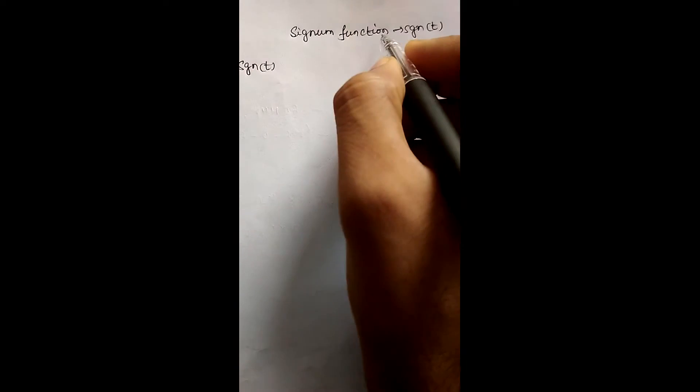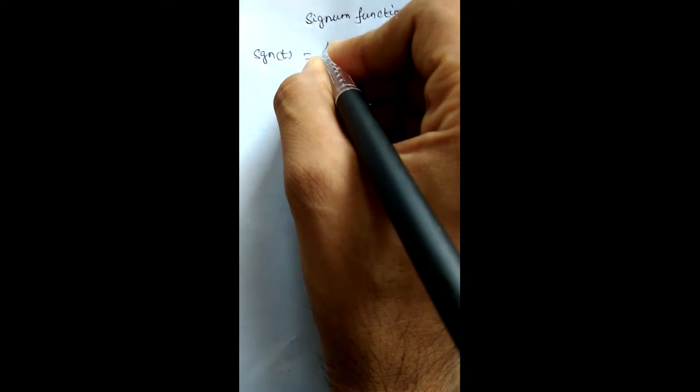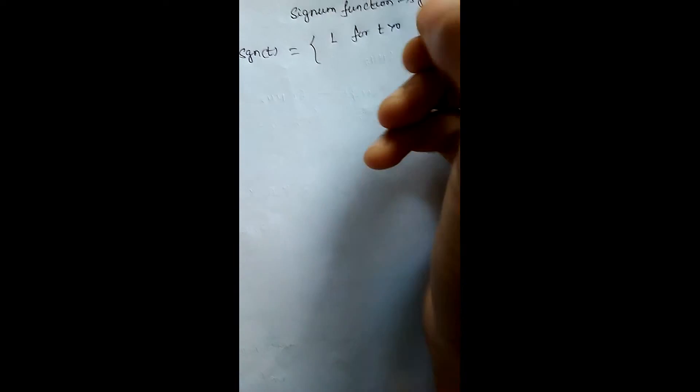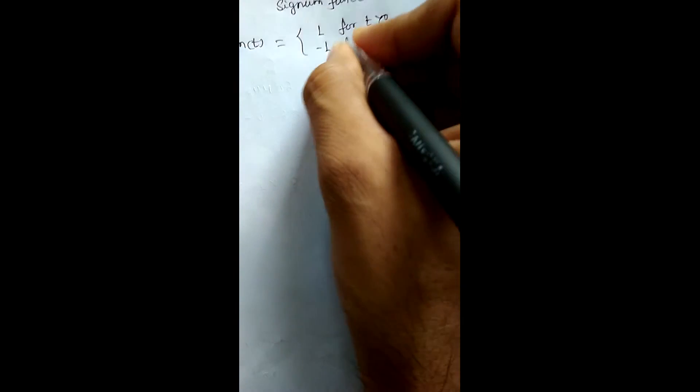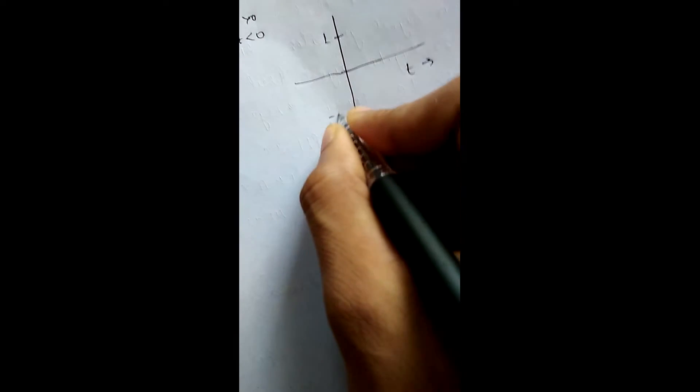Hello friends. I am going to show you how to find the Fourier transform of a signum function. Signum function is denoted by sgn(t). Signum function is defined as equal to 1 for t greater than 0 and equal to minus 1 for t less than 0. The graphical representation shows t on the axis, with value 1 and minus 1 marked.